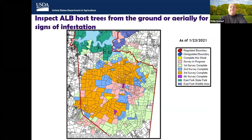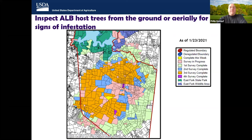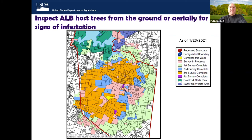The various color designations on this map indicate where we have surveyed and how many times we have surveyed there. Even though our surveyors are really good at identifying ALB damage, the damage can be difficult to detect and we don't find all the infested trees, which means we have to go back and conduct resurveys. We usually won't return to survey any given property until at least a year has gone by, so that any missed infested trees become more severely damaged and therefore more readily visible.